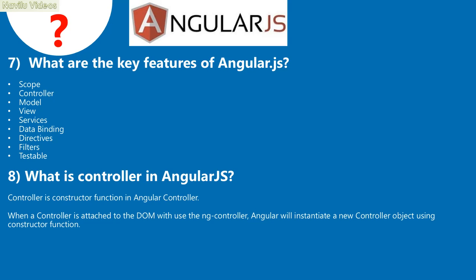What are the key features of AngularJS? The key features include: Scope, Controller, Model, View, Services, Data binding, Directives, Filters, and Testability.